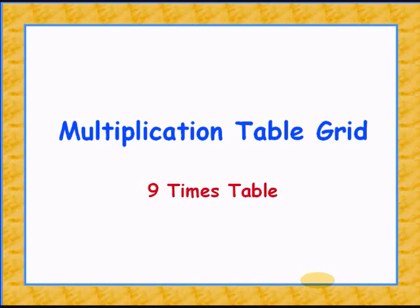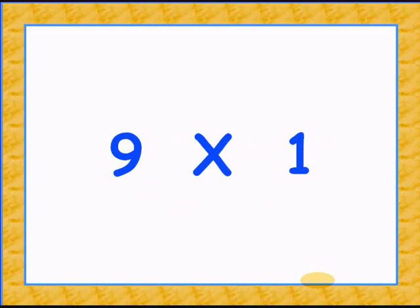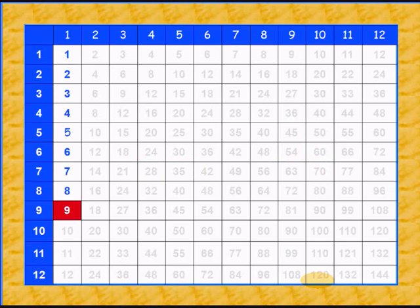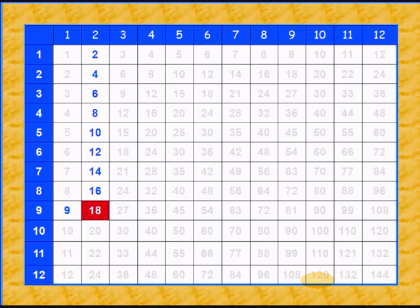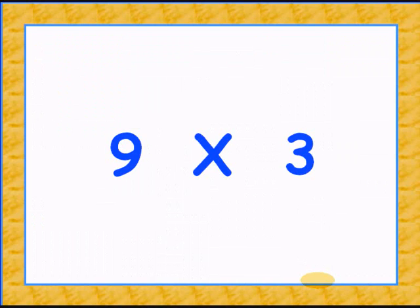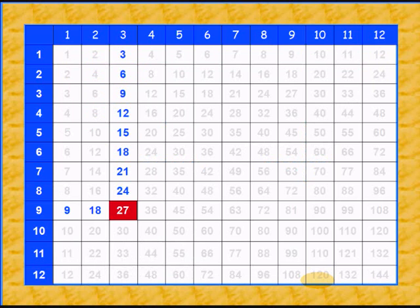Let's learn our ninth table. 9 times 1 is 9. Adding 9 times 2 gives 18. Adding 9 times 3 gives 27.